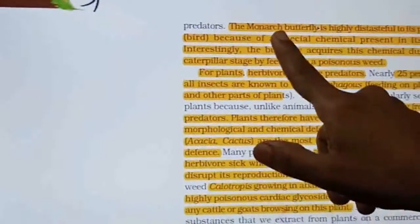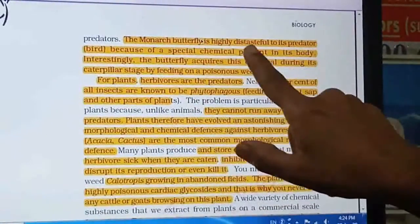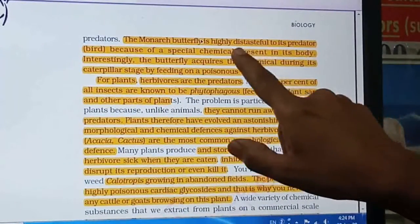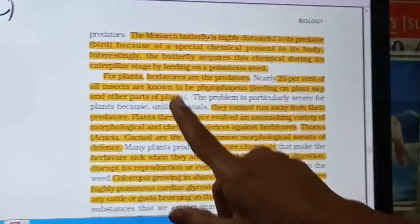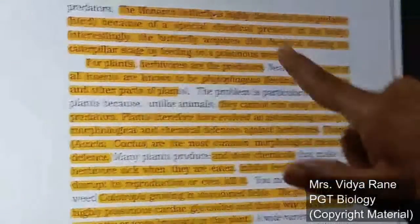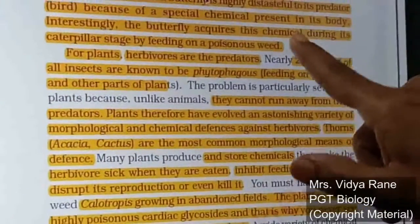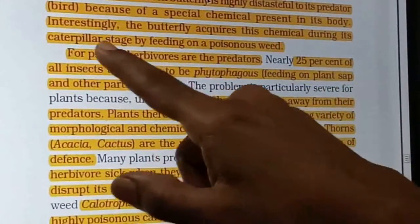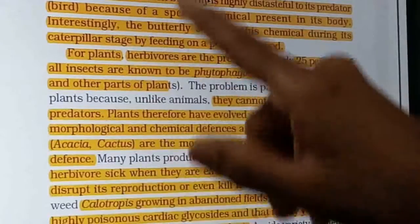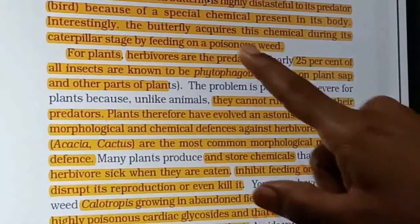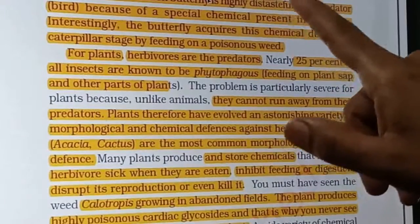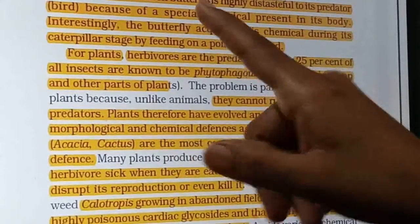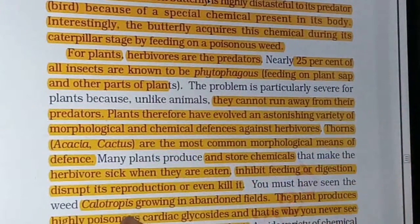Another example is the monarch butterfly, which has become highly distasteful to its predators. This is achieved by secreting a chemical during its caterpillar stage, acquired by feeding on a poisonous weed. Because of this distasteful chemical, the monarch butterfly is saved from its predators.